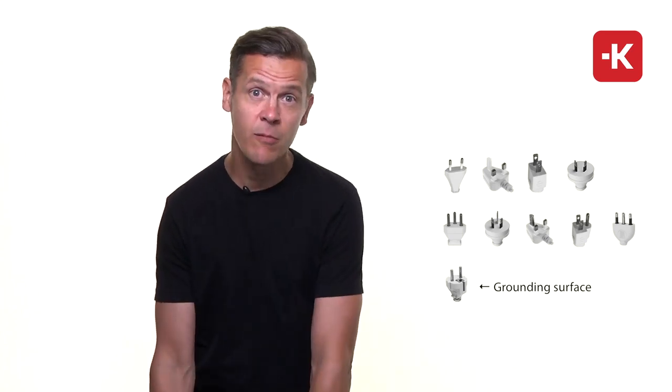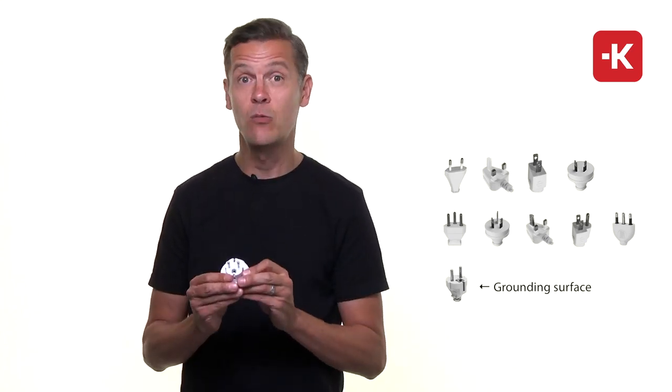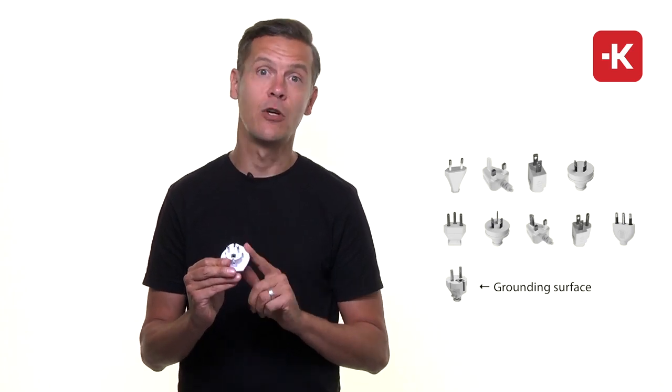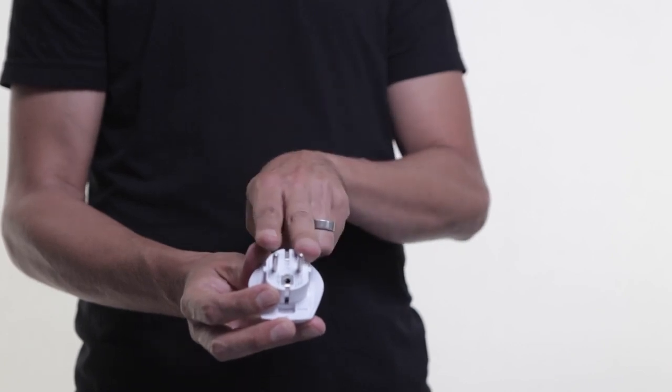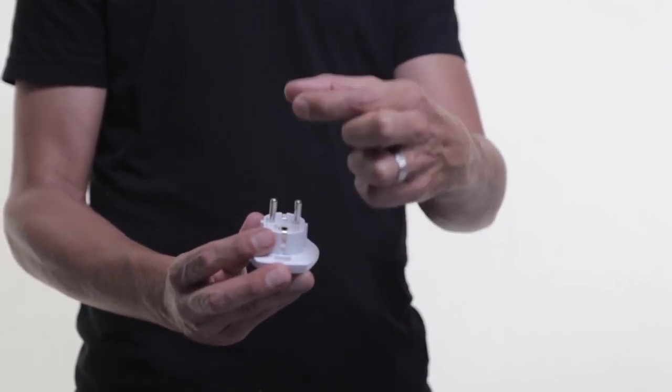When you get to Europe, you're probably going to encounter this, which is called a Schuko plug. You'll find this in Germany, Belgium, Greece, France, etc. Now, the ground connection is provided through these metallic surfaces along the side of the plug.